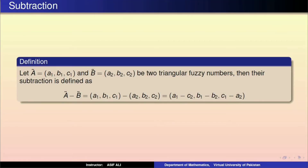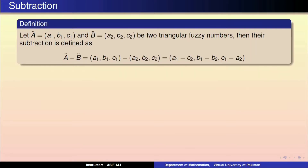Topic is subtraction of two triangular fuzzy numbers. The definition is that A tilde is equal to (a1, b1, c1) and B tilde is equal to (a2, b2, c2) as triangular fuzzy numbers. Then their subtraction is defined as A tilde minus B tilde is equal to (a1, b1, c1) minus (a2, b2, c2), which is equal to (a1 minus c2, b1 minus b2, c1 minus a2).